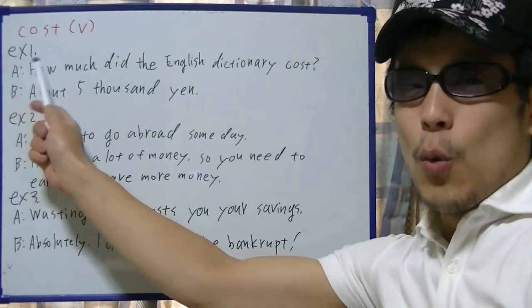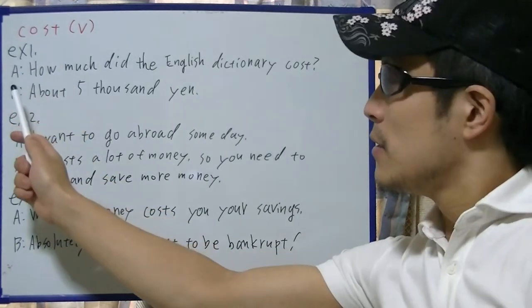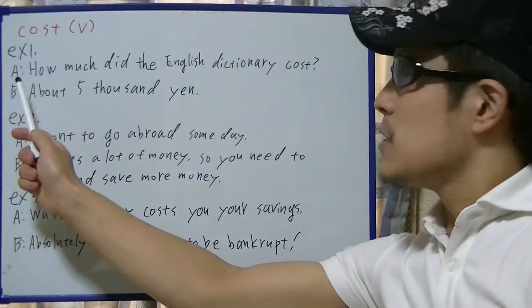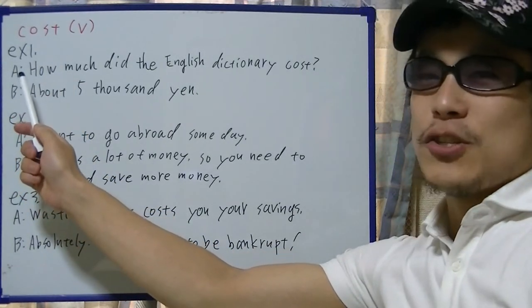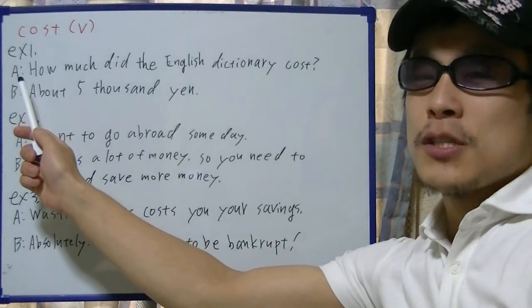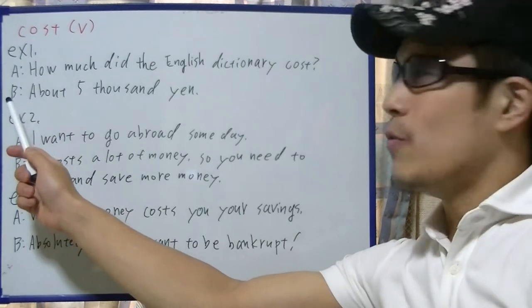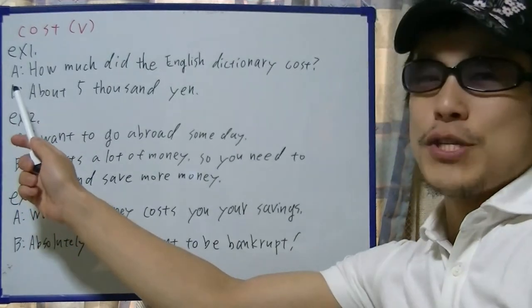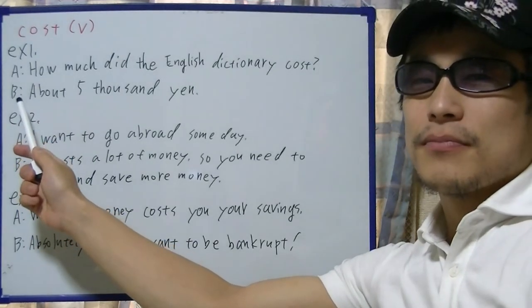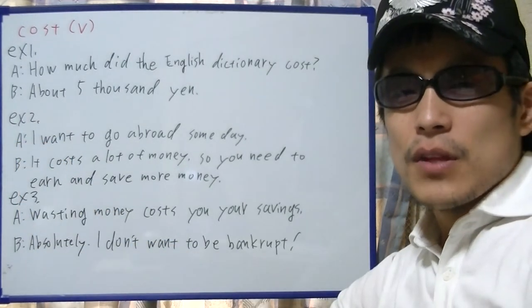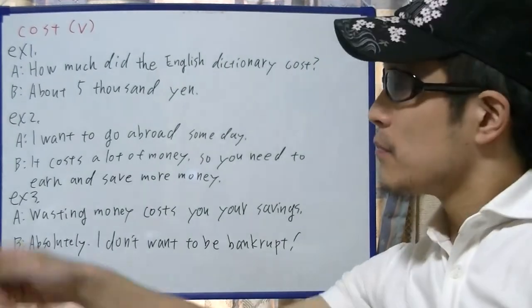Example 1. How much did the English dictionary cost? About 5,000 yen.